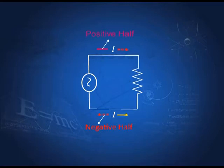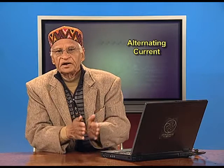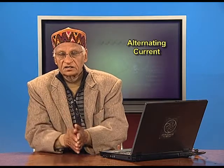Once again, suppose this is a circuit. In an ordinary current, the electrons will always be flowing in one direction. Here, when the current changes direction, the electrons will flow in one direction for one half of the cycle and will flow in the opposite direction for the next half cycle.